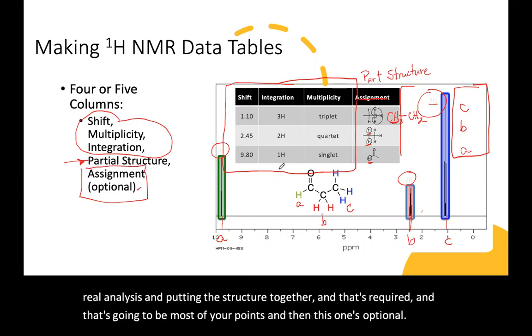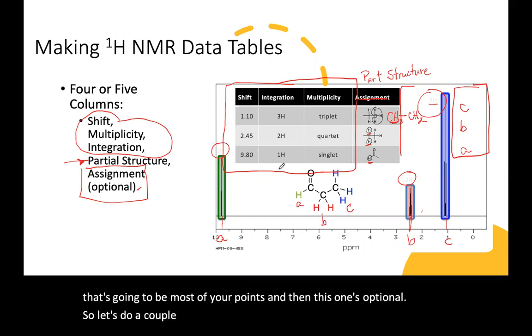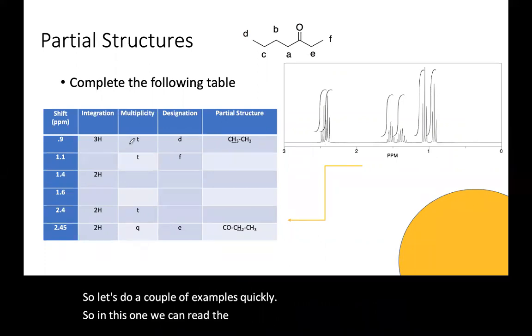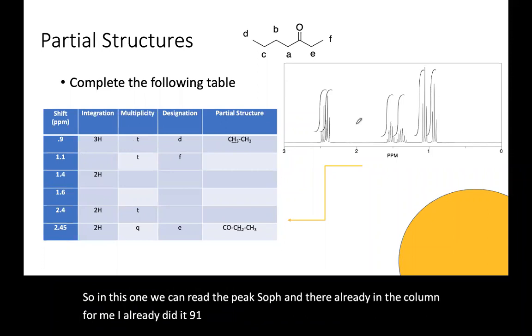So let's do a couple of examples quickly. So in this one, we can read the peaks off and they're already in the column for me. I already did it 0.9, 1.1, 1.4. Then integration.